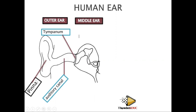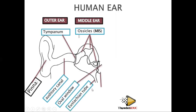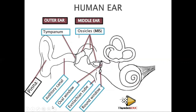The middle ear is made up of three bones called ossicles: the malleus, the incus, and the stapes. It also has the Eustachian tube, which connects to the mouth — so when you yawn you feel air going through the ear because the mouth is connected to the Eustachian tube. Then there is the oval window, which is oval-shaped, and the round window, which is round-shaped.